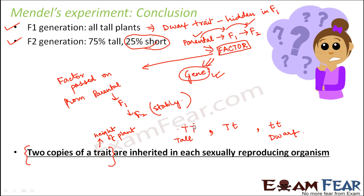If both copies are the same — both tall — obviously the tall trait gets expressed because there is no dwarf trait. But if one is tall and the other is dwarf, then only one trait will get expressed and the other will remain hidden. In the F1 generation, the plants were tall because the tall trait got expressed, but the dwarf trait was also present — just hidden. In the next generation, that hidden trait got expressed as 25% short plants.